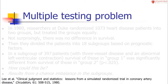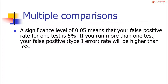This is the idea of the multiple testing problem. If we set a significance level of 0.05, we're allowing a false positive rate of 5% for one test. But if you run more than one test, every test has a 5% false positive chance. If you run 18 tests, the probability of getting a false positive is much higher, and we can actually calculate what it would be.